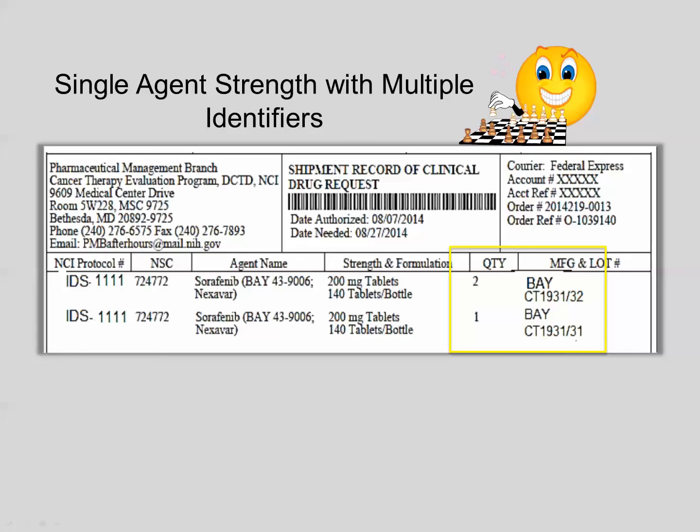Sometimes there are multiple identifiers on the same shipping record for the same agent strength. In this example, you receive two bottles of identifier CT1931-32 and one bottle of identifier CT1931-31. Thus, carefully verify the shipping record against what you received.